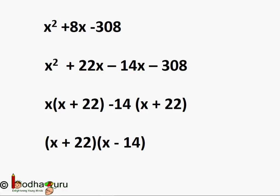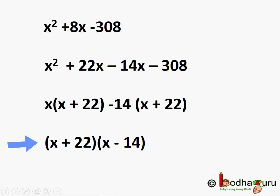Now we take out the common factor x from the first two terms and −14 from the next two terms. We get x(x + 22) − 14(x + 22). Now (x + 22) is common in both terms, so we take it as the common factor. This gives us (x + 22)(x − 14).